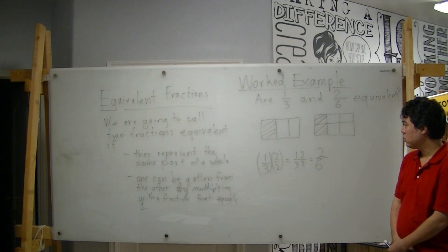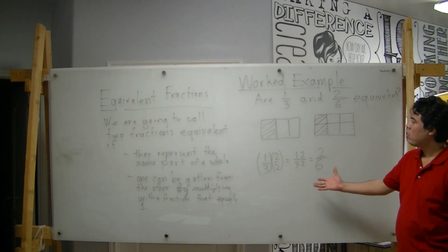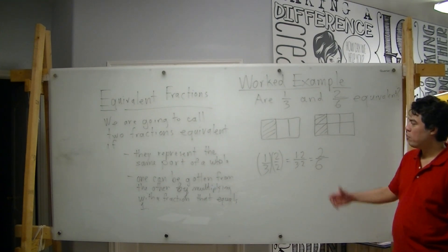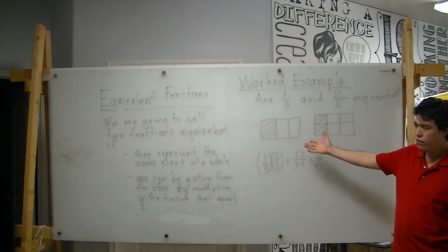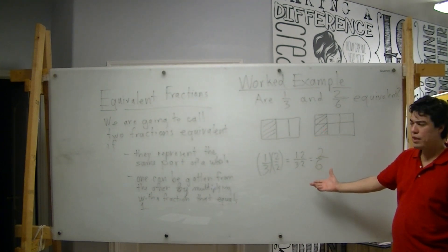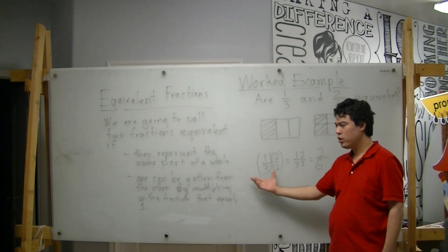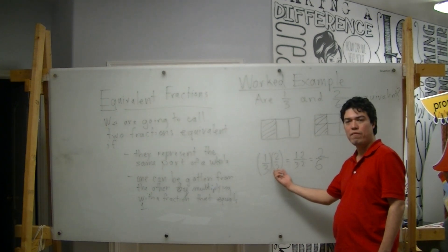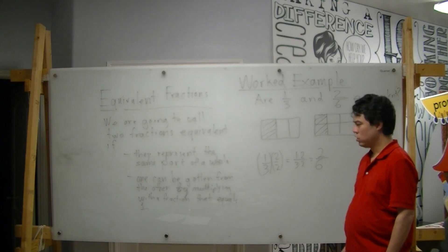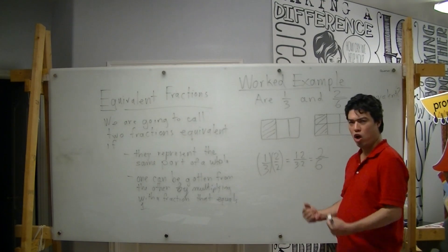And let me see. And so, there you go. One-third and two-sixths are equivalent fractions. That represents, again, both that they represent the same portion of a whole, as well as that you can get from one to the other by multiplying one by a fraction that equals one. Yes! This is so awesome!